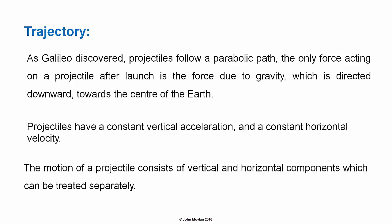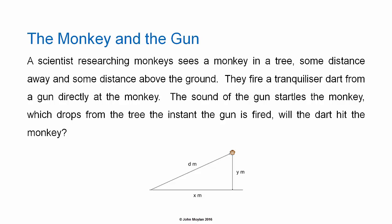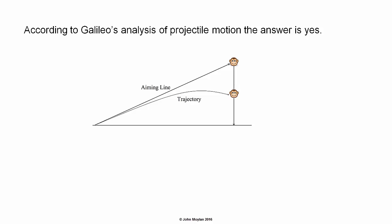The motion of a projectile consists of vertical and horizontal components which can be treated separately. There is a well-known thought experiment in physics called the monkey and the gun, in which you imagine a scientist who sees a monkey in a tree some distance away and some height above the ground, but within range of their tranquilizer gun. They fire a tranquilizer dart directly at the monkey; however, the sound of the gun startles the monkey, which drops from the tree the instant the gun is fired. The question is: will the dart hit the monkey? According to Galileo's analysis of projectile motion, the answer is yes — the dart will hit the monkey.